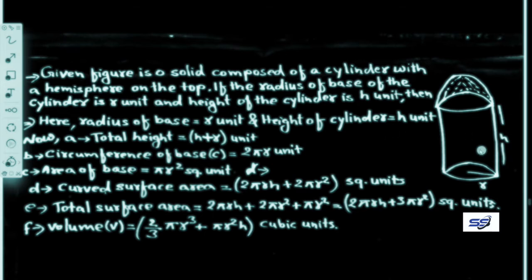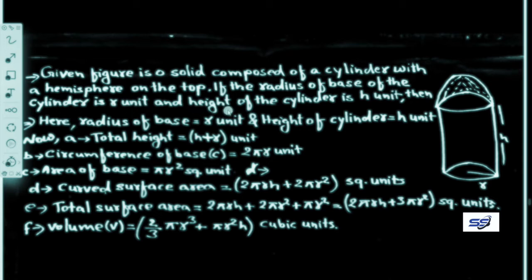For a solid composed of a cylinder with a hemisphere on top, given radius R and height H: total height = H + R units, circumference of base = 2πR units, area of base = πR² units. Curved surface area = 2πRH + 2πR². Total surface area = 2πRH + 2πR² + πR² = 2πRH + 3πR².